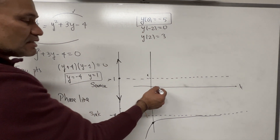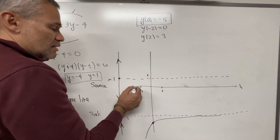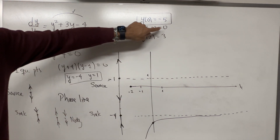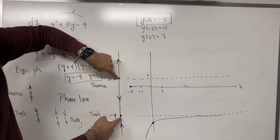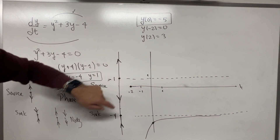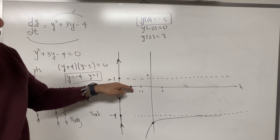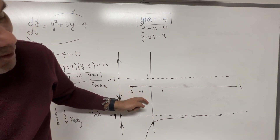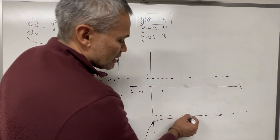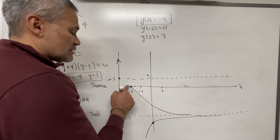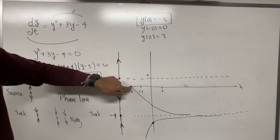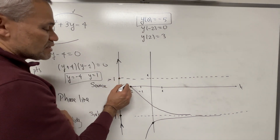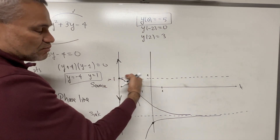The solution y(-2) = 0 goes through the point (-2, 0). Since 0 is in the middle piece where the arrow goes down, the function is decreasing. Going downward, it is stopped by the equilibrium solution y = -4 and approaches it asymptotically. In the other direction, the function goes up and approaches y = 1 asymptotically — that equilibrium solution becomes a horizontal asymptote.